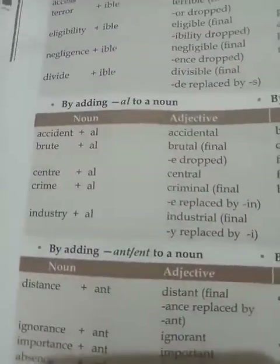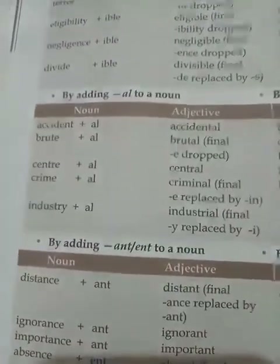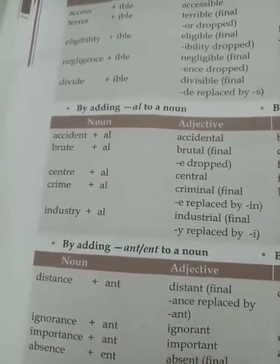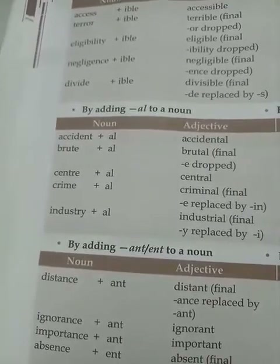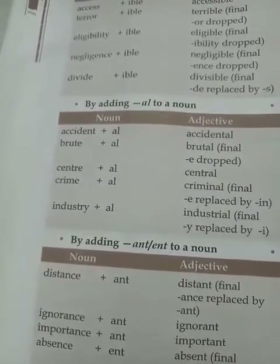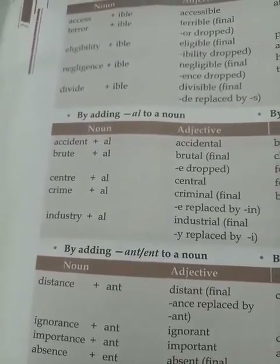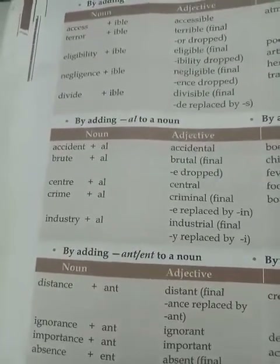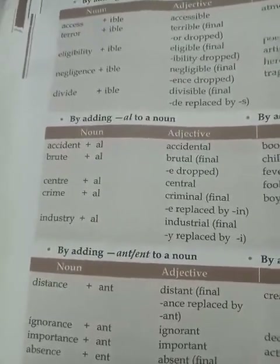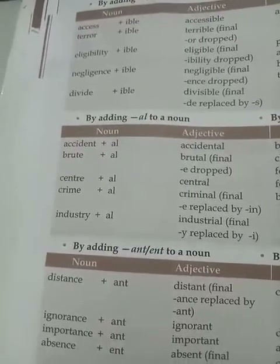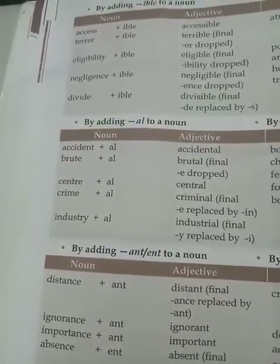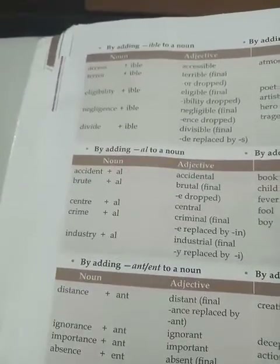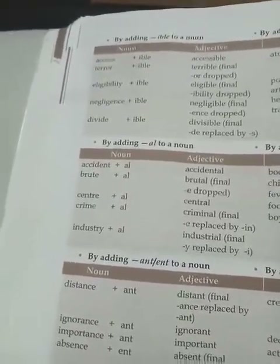By adding AL to a noun: ACCIDENT plus the suffix AL becomes ACCIDENTAL; BRUTE plus the suffix AL becomes BRUTAL. We can see that adding this suffix to a noun forms an adjective.